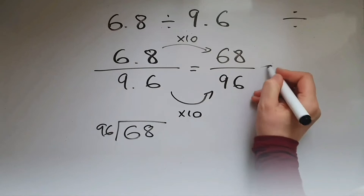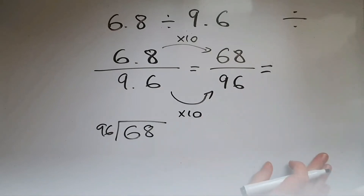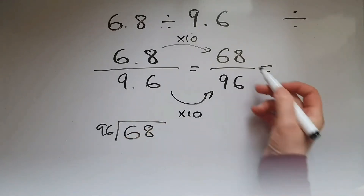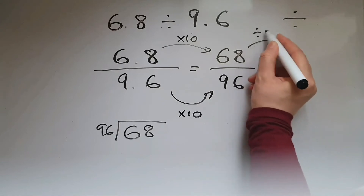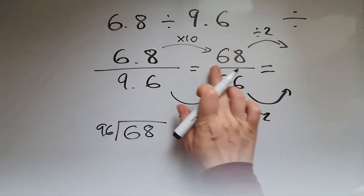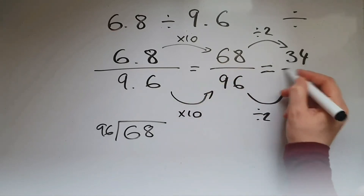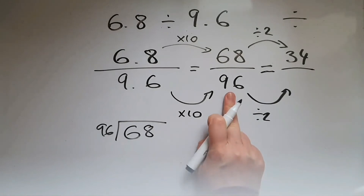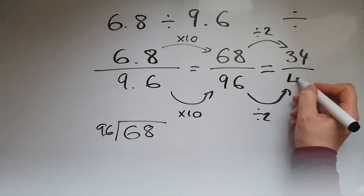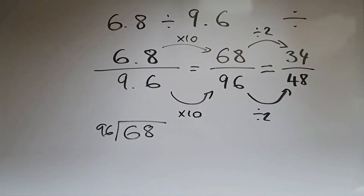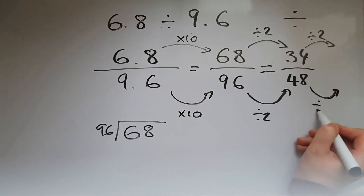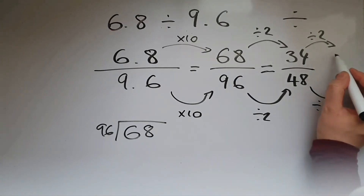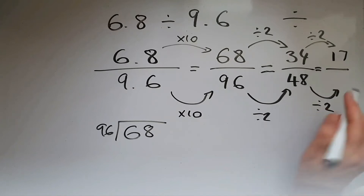If I want, I can use the bus stop method, but I can also simplify the fraction. Looking at 68 and 96, both end in even digits so I can divide them both by 2, giving me 34 over 48. I can simplify even further — dividing both by 2 again gives me 17 over 24.